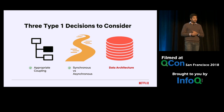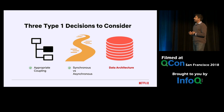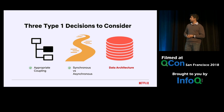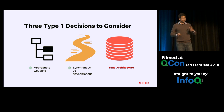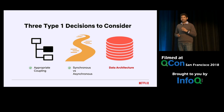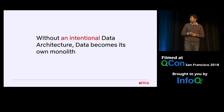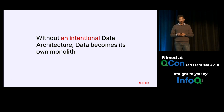The third type one decision is around data architecture. Whether you are breaking up a monolith into microservices or re-designing one of your microservices, please consider the data architecture as a first-class citizen — it deserves that specific role. Without an intentional data architecture, data becomes its own monolith.